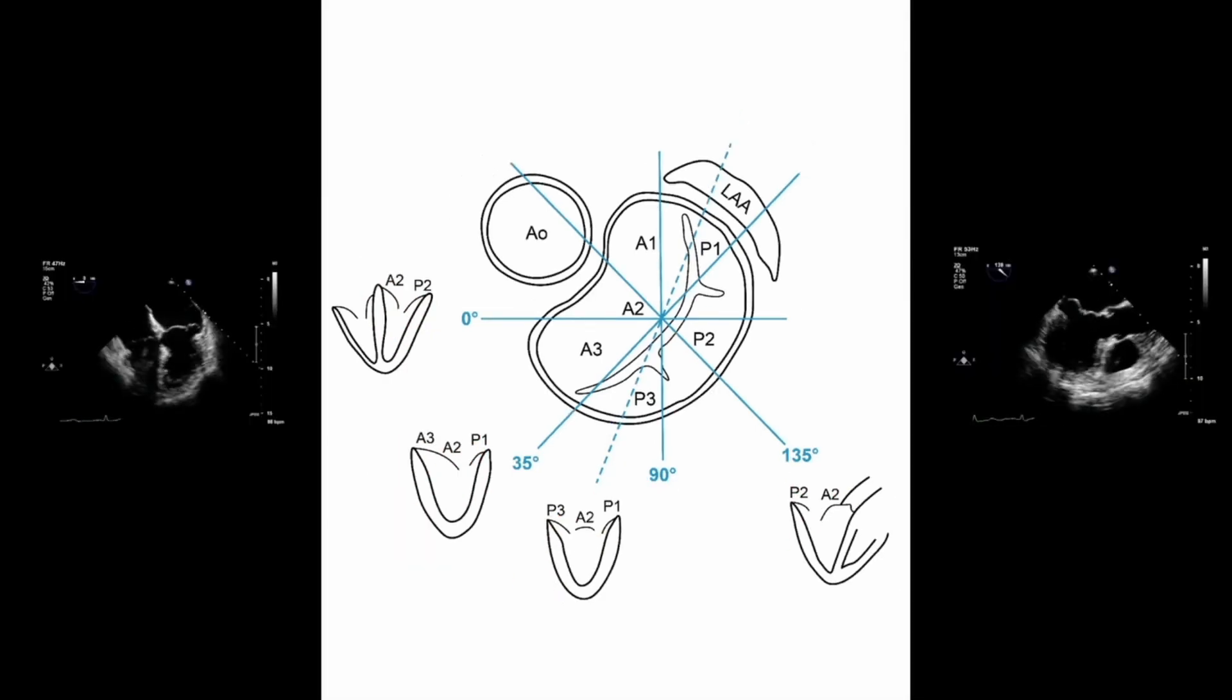By way of an example, here are two views of the heart. On the left hand side of the screen we have a mid-esophageal four chamber view which is equivalent to what we're seeing in the diagram just alongside it.